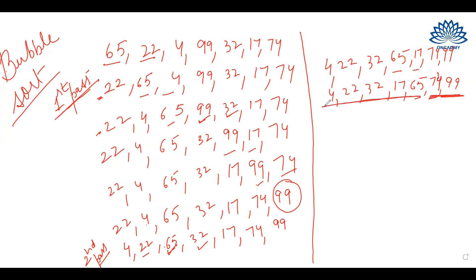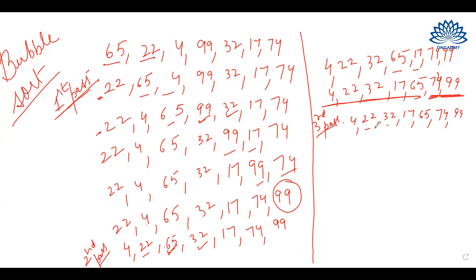Now we are left with this list. The 3rd pass will start. We'll compare 4 with 22. 4 is already at its place, so there will be no change. We'll not change 74 and 99. Now we'll compare 22 with 32. They are also at their correct places, so there will be no change in their positions. In the next iteration, we'll compare 32 with 17. Since 17 is smaller than 32, we'll swap them.